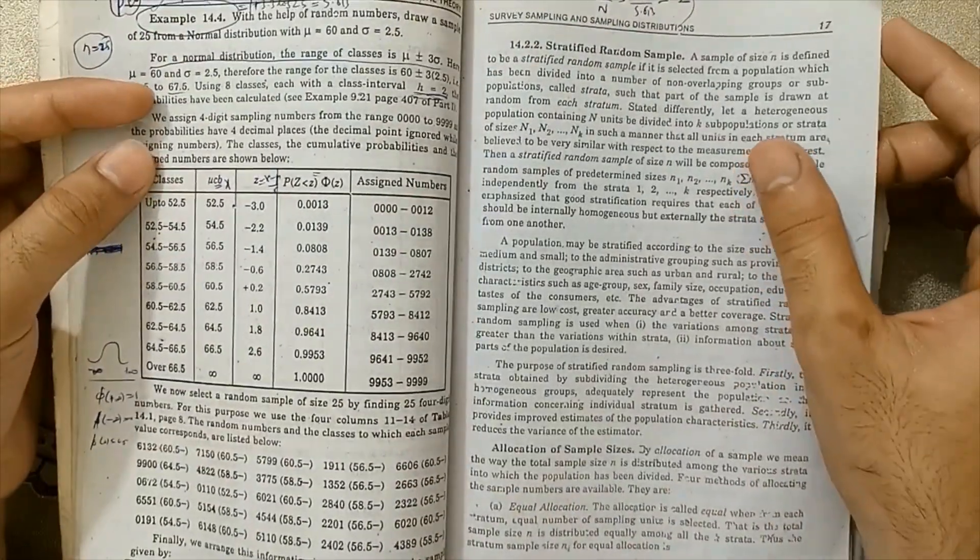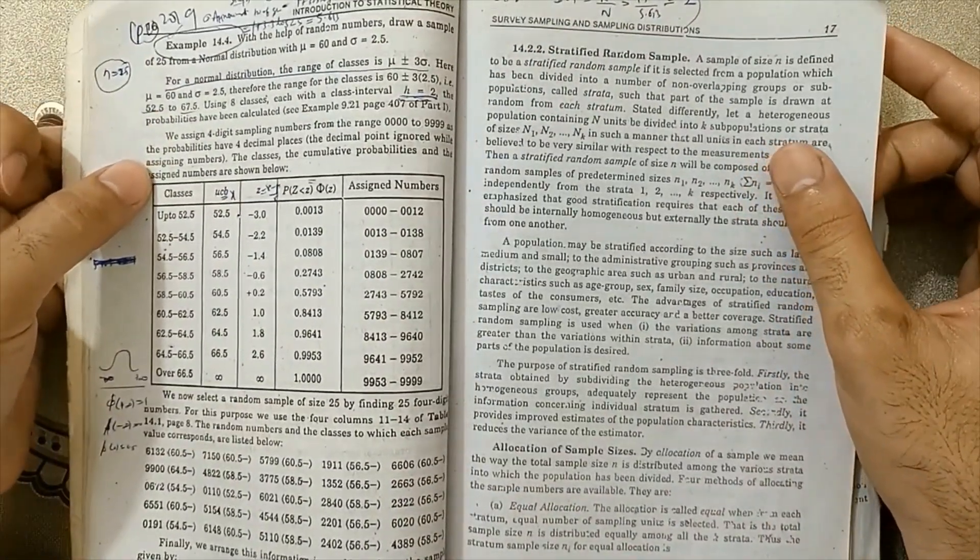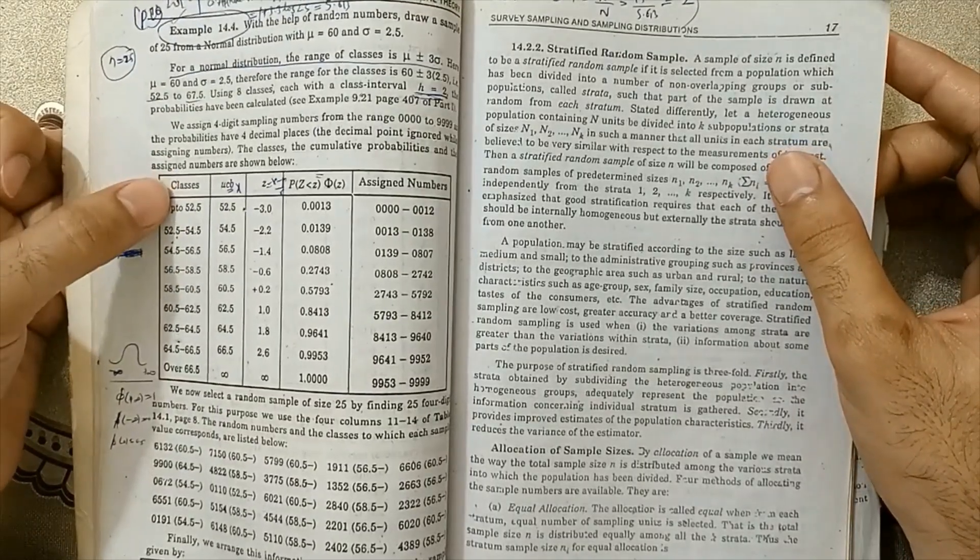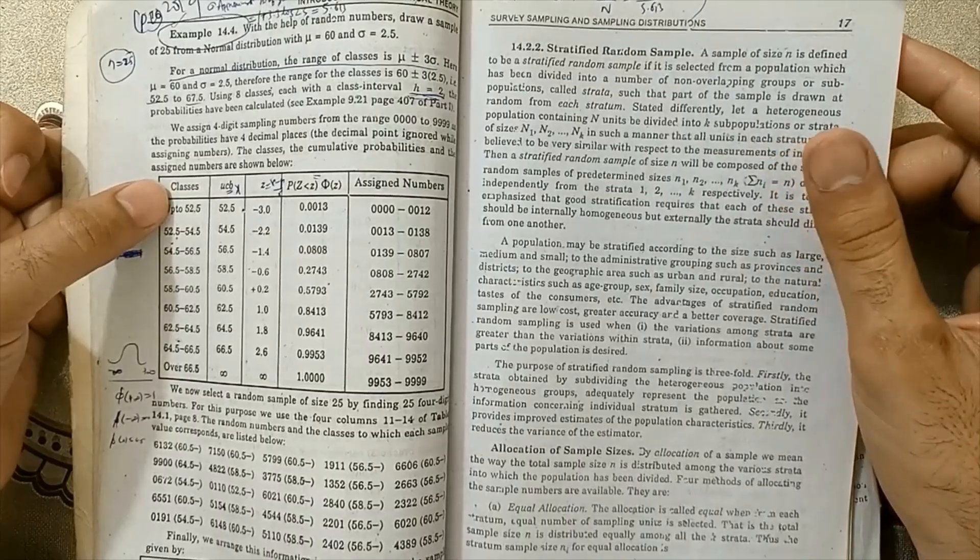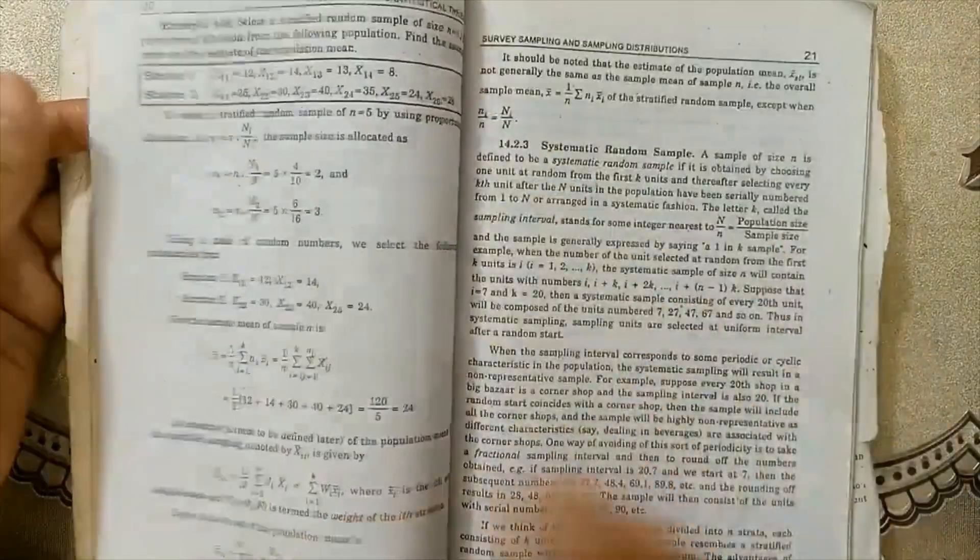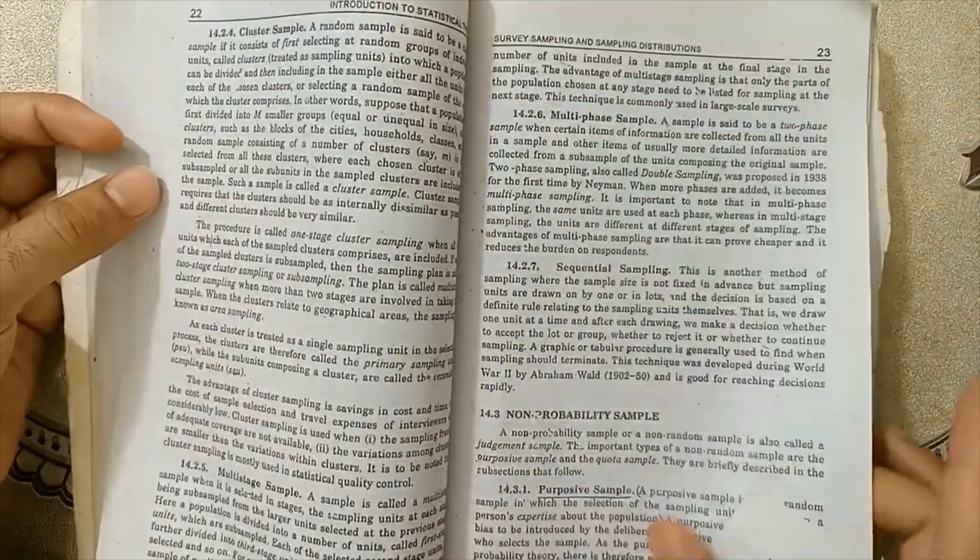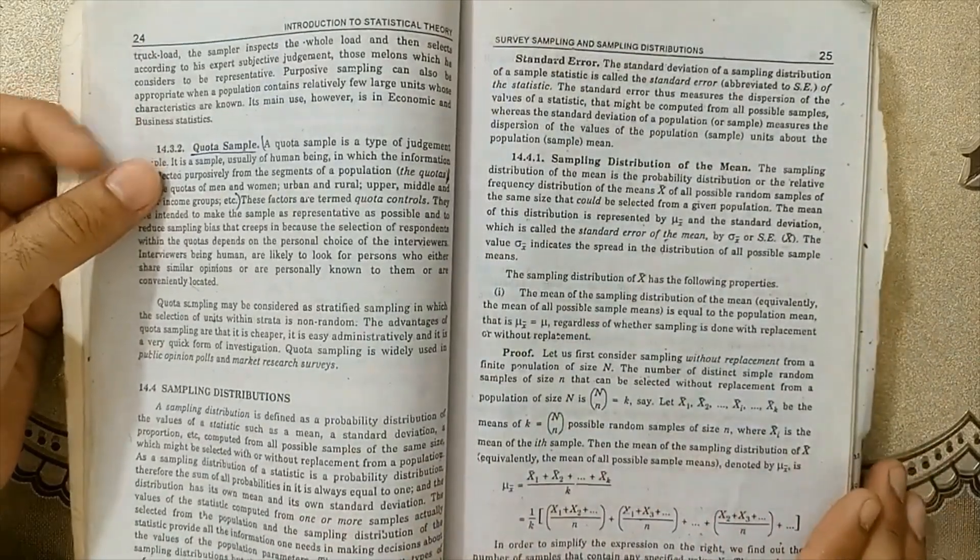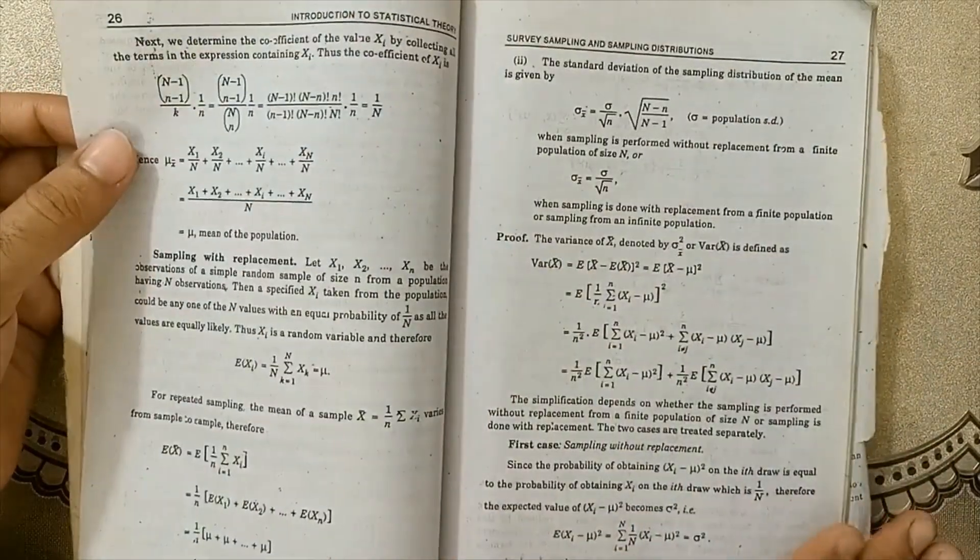The example 14.4 is very important for how to use random number table for normal distribution. I've already posted this lecture with the concepts - you can watch the playlist of this channel. Next, non-probability samples: purposive sample, quota samples - very important definitions.